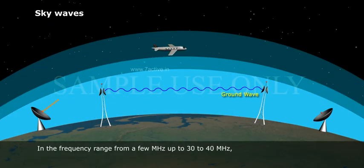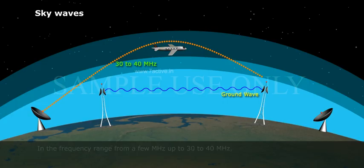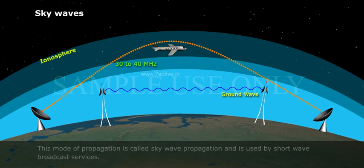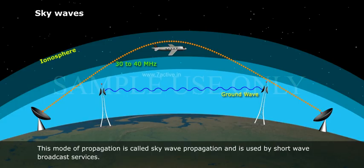In frequency range from a few megahertz up to 30 to 40 megahertz, long-distance communication can be achieved by ionospheric reflection of radio waves back towards the Earth. This mode of propagation is called sky wave propagation and is used by short-wave broadcast services.